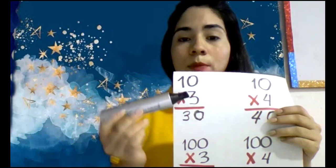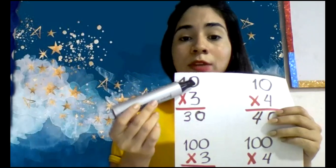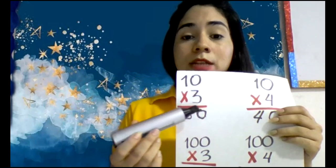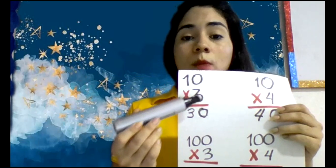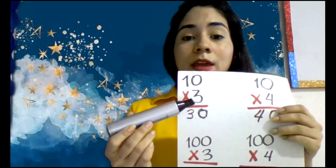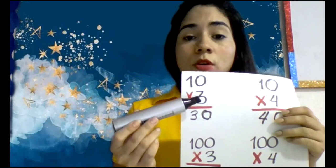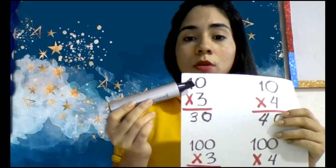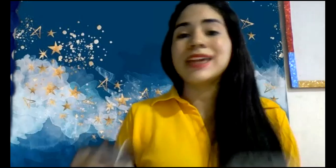¿Cómo lo hago? Primero el 3 con el 0, pero tienes que saber que en la multiplicación hay reglas. ¿Cuál es la regla aquí? Que cuando multiplicas un número por cero, te va a dar cero siempre.